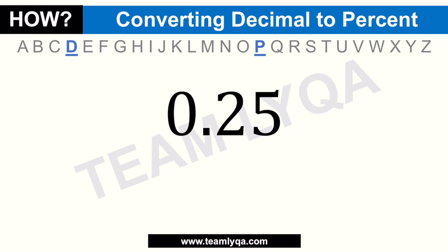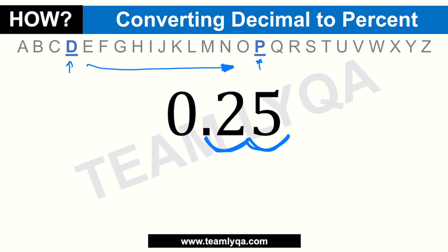How do you remember that it's left to right? Here's a memory device: if you list all the letters from A to Z, you'll notice that D for decimal comes before P for percent. So if there's an arrow from D to P, the movement is to the right. That's the same direction you move the decimal when converting decimal to percentage. So 0.25 becomes 25 percent.